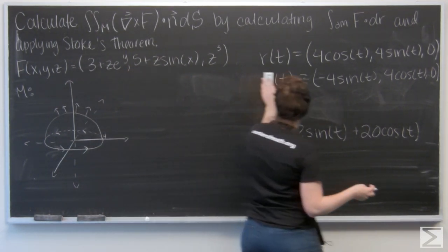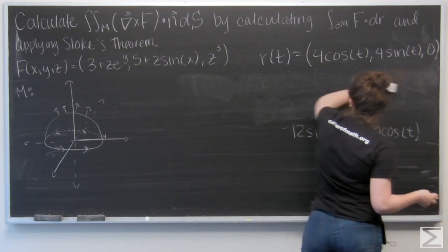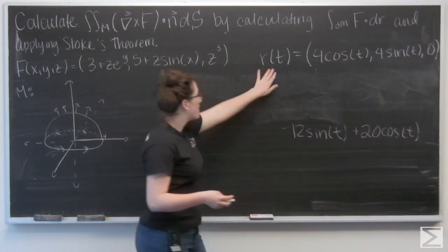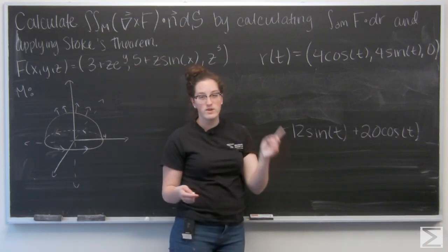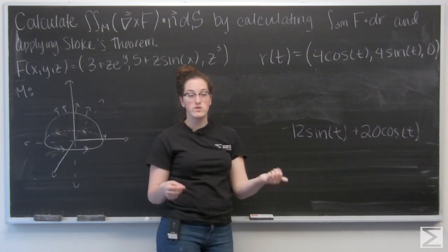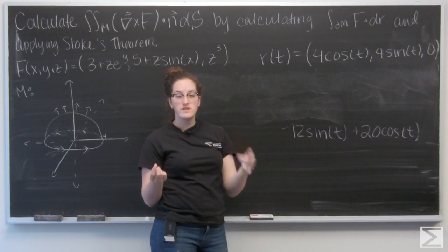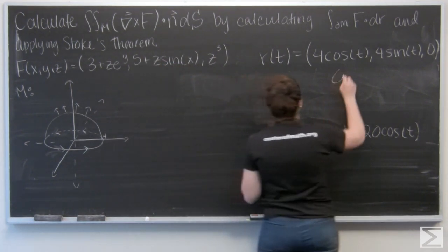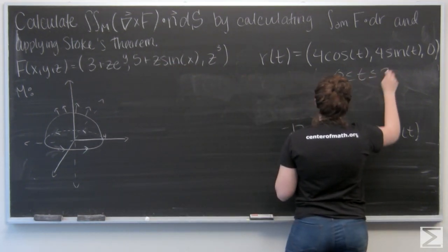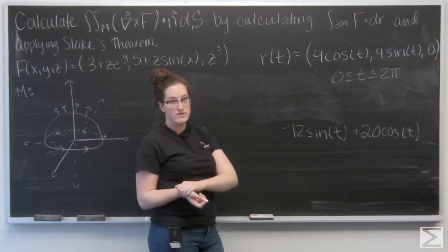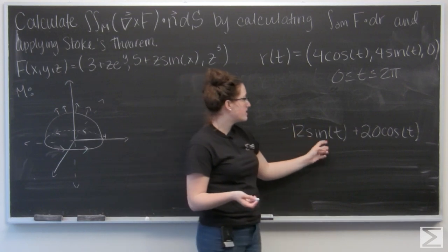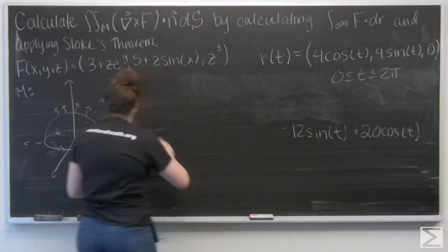And when I parametrized R, now I need to set bounds for T. So to go all the way around the circle, I'm going to go from T equals 0 to T equals 2 pi. It's just like theta, you know, I go all the way around the circle. And I'm going to use that interval, that R of T is over, to integrate this. So let's set this up.